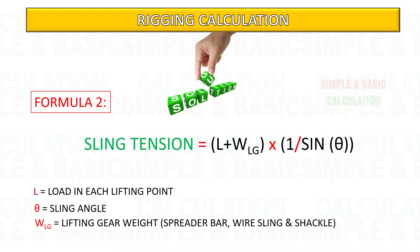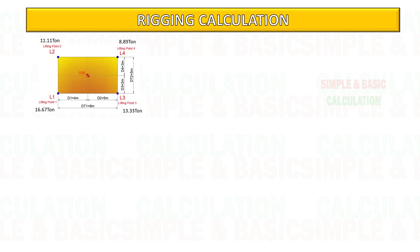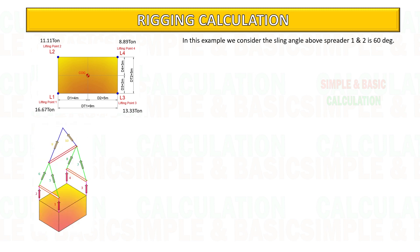This is formula number two for calculating the tension of the slings above spreader bar number 1 and number 2. In this example, we consider the sling angle above spreader bar number 1 and number 2 is 60 degrees.